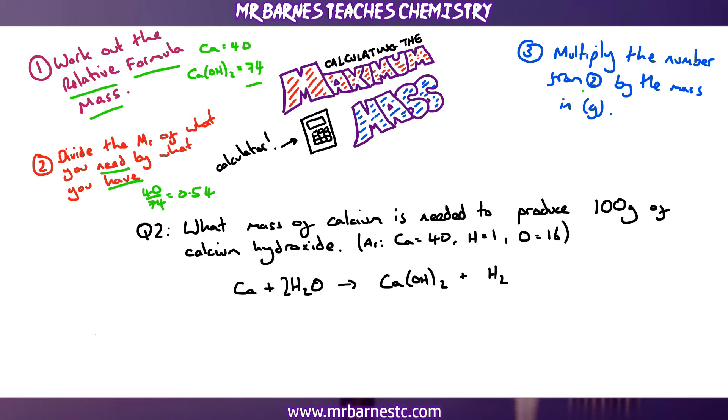And then the third mark, I multiply whatever my answer was, which is 0.54, by the mass in the question. 0.54 times by 100 gives me 54 grams. And again, 54 grams would get you all three marks. But please put your working down, otherwise you might lose some marks.